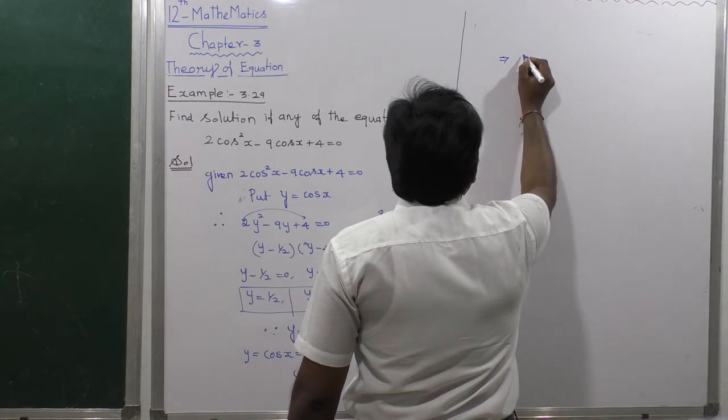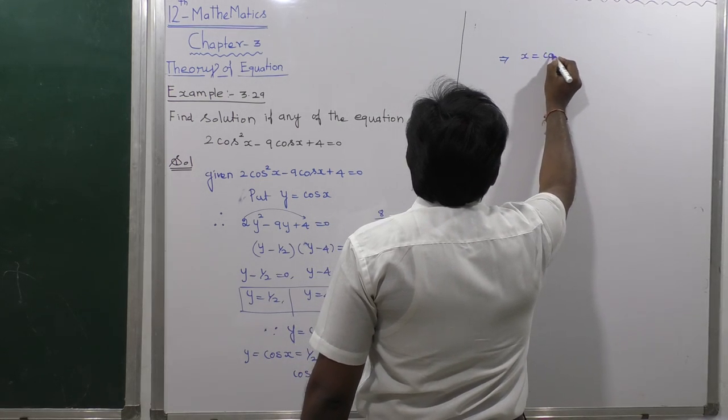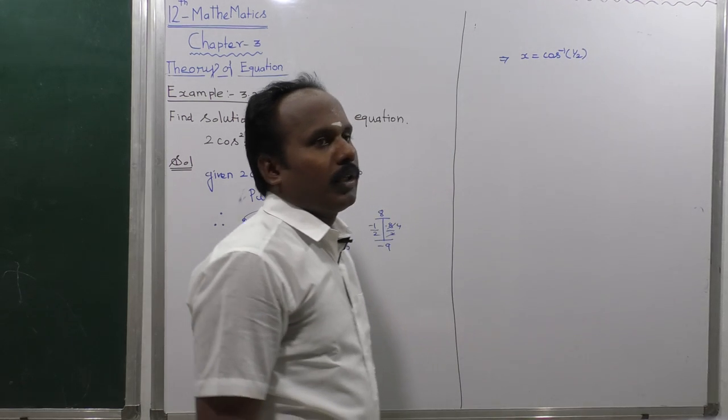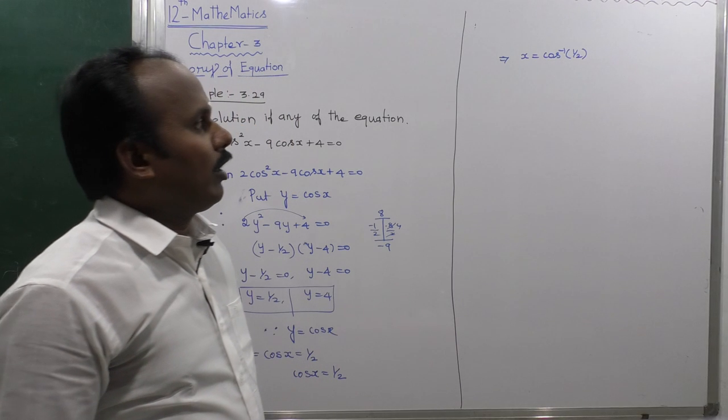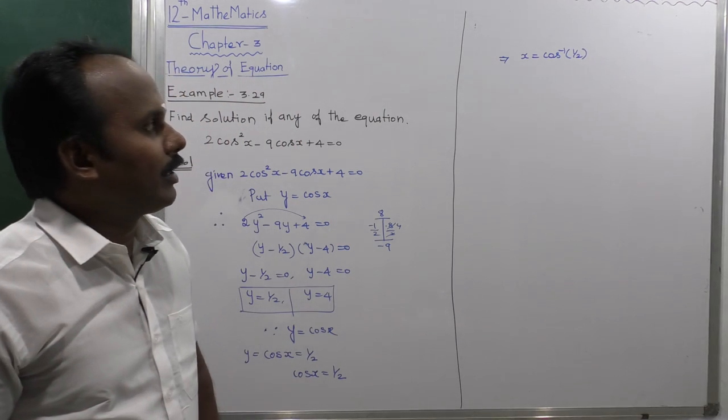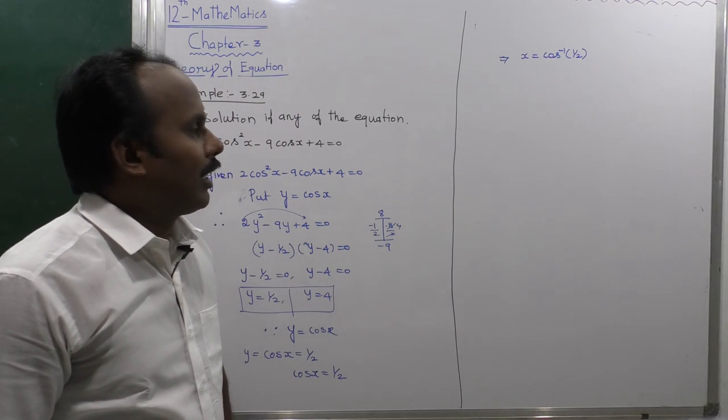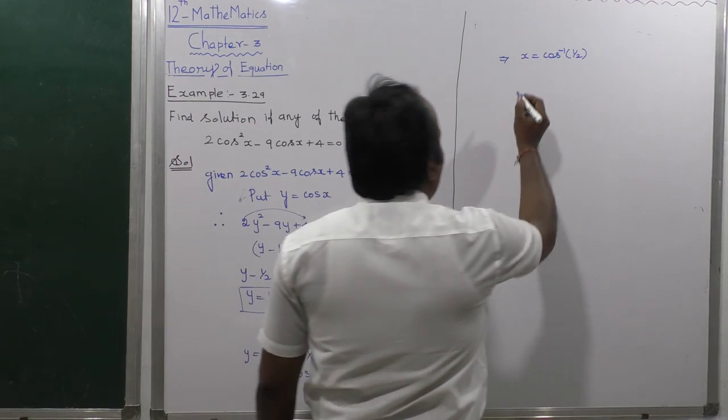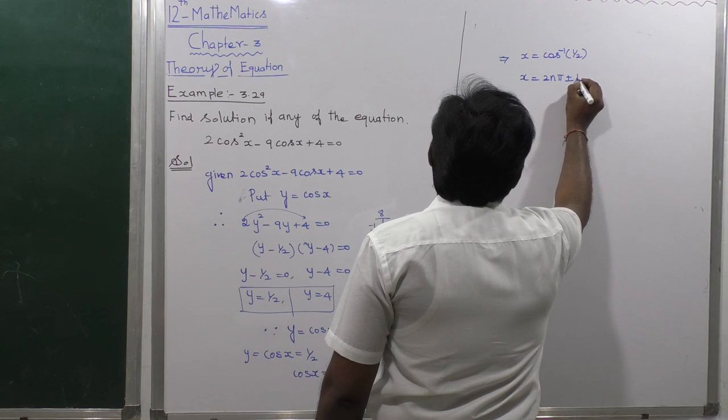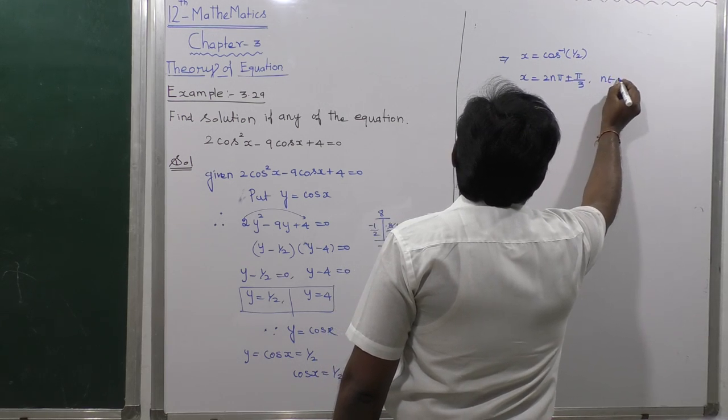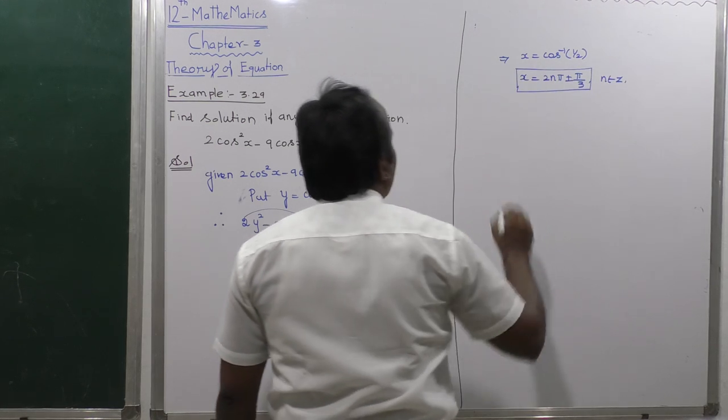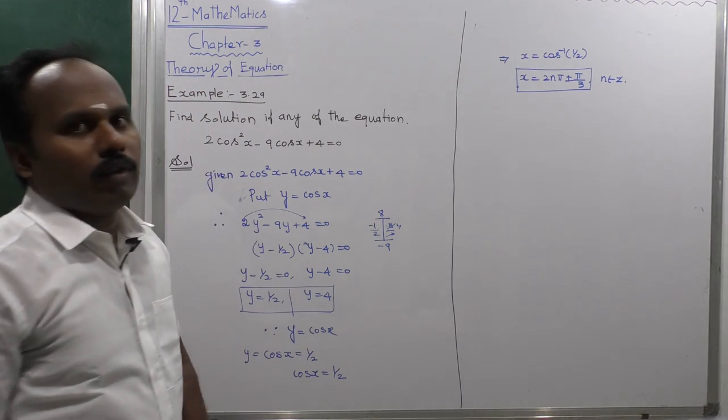Which implies x = cos⁻¹(1/2). The standard general form: 1/2 is cos(π/3). The standard general form means x = 2nπ ± π/3, where n belongs to integers Z.